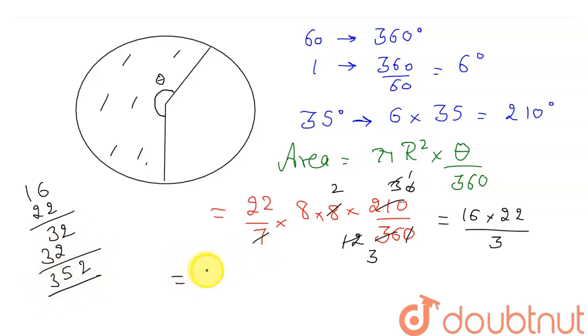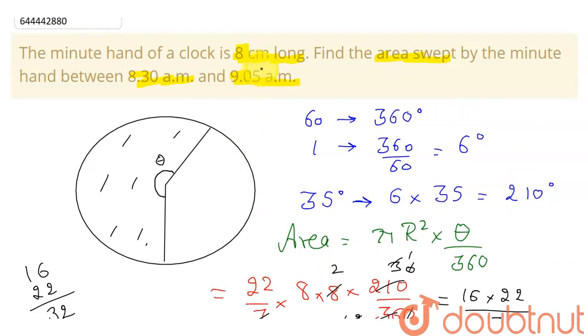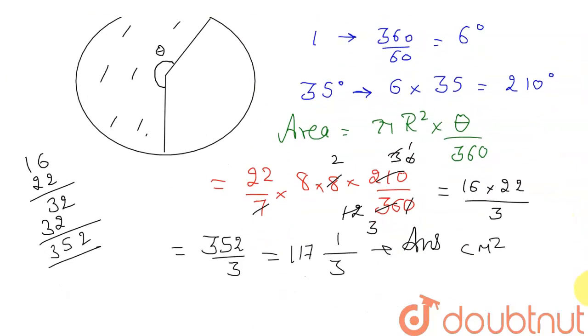352. So this will give me 352 upon 3, which I can further write as 3, 117, 1. So this will be our answer, and this will be centimeter squared. I forgot to mention the units - as this length is given in centimeter, so this is my answer. Hope you understand, thank you.